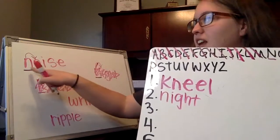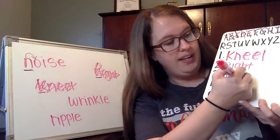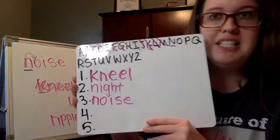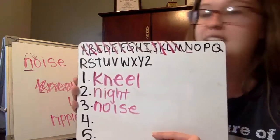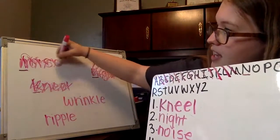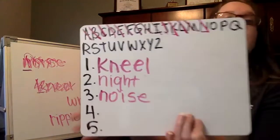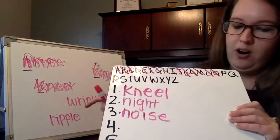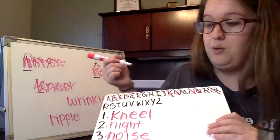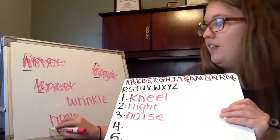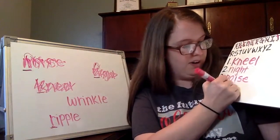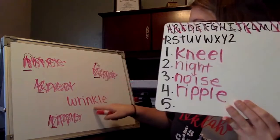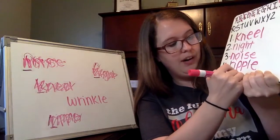So 'night' is number two on my list, and next will be the N-O word, which was 'noise' — that's number three. I'm going to cross off both words that start with N and cross off the letter N on our alphabet. There are no O, P, or Q words. There is an R word: 'ripple' — so that's word number four. And now I can stop because I only have one word left — the very last word on my list must be 'wrinkle.'